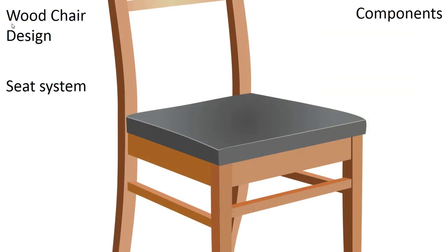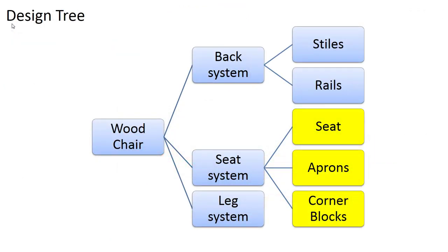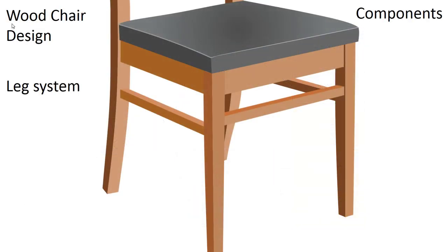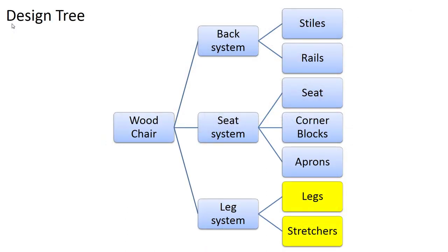Moving on to the seat system, we have the seat itself, four aprons around the edges of the seat, and corner blocks that hold the legs to the aprons to tie the whole thing together. We can expand our design tree to show the seat, corner blocks, and aprons as part of the seat system. In the leg system, there are the legs themselves plus stretchers that keep the legs at an appropriate distance from each other. Note that the back two legs are actually the styles previously captured in the back system.